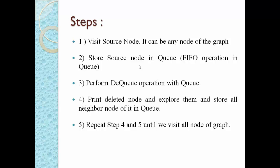To summarize the steps: first, consider any node as the source node. Second, store the source node inside the queue using enqueue. Third, perform dequeue — the source node is deleted due to FIFO. Fourth, print the deleted node and explore it by visiting all its neighbor nodes, storing them in the queue. Repeat step four until the queue is empty and all nodes are visited.